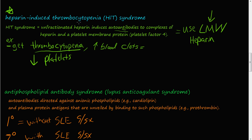So that's heparin-induced thrombocytopenia or HIT syndrome. Heparin is usually an anticoagulant, but in this case it causes more blood clots and you have thrombocytopenia — it's because your immune system is creating antibodies to this heparin, to this drug.